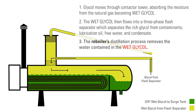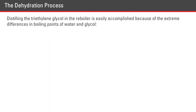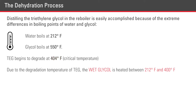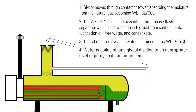The reboiler's distillation process removes the water contained in the wet glycol. Distilling the triethylene glycol in the reboiler is easily accomplished because of the extreme differences in boiling points of water and glycol. Water boils at 212 degrees Fahrenheit, while glycol boils at 550 degrees Fahrenheit. However, TEG begins to degrade at 404 degrees Fahrenheit, which is its critical temperature. Due to the degradation temperature of TEG, producers heat the wet glycol between 212 and 400 degrees. This allows the water to be boiled off and the glycol to be distilled to an appropriate level of purity so that it can be reused. The water flashes off as steam, but the glycol remains in the reboiler.